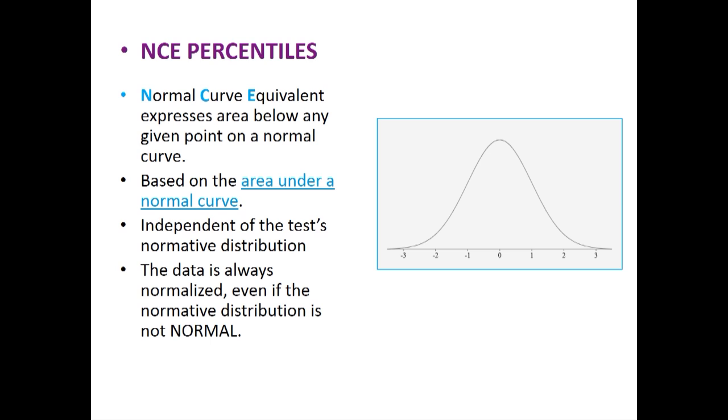These two types of percentiles are referred to as percentile ranks or NCE percentiles. In the next slides, we will consider the relation between these percentile scores and the distributions they are anchored to. First, let's consider NCE percentiles. NCE stands for Normal Curve Equivalent. As you might imagine from the name, this means that the percentiles are anchored to the normal curve. These scores are actually independent of the test's normative distribution.